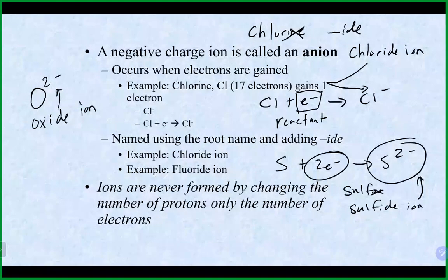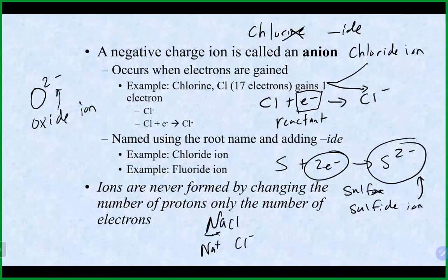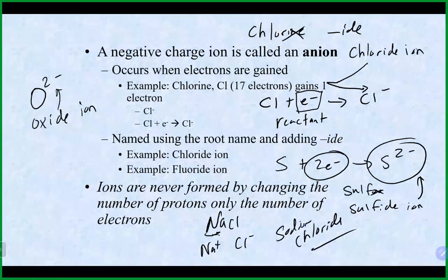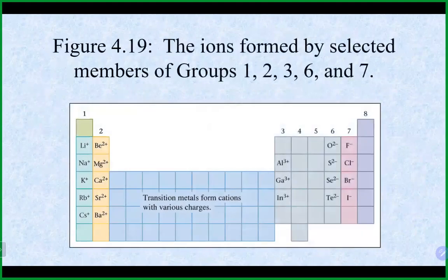This is how we get NaCl — a sodium ion and a chloride ion together, which is why it's called sodium chloride. On the periodic table, elements themselves don't have charges — they only gain charges when metals and nonmetals come together. Certain charges are typical: group 1 typically forms plus-one, group 2 forms plus-two, and aluminum (group 3) forms plus-three.